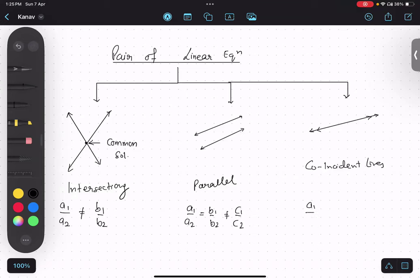So, what is the condition here? A1 upon A2 equals to B1 upon B2 equals to C1 upon C2.